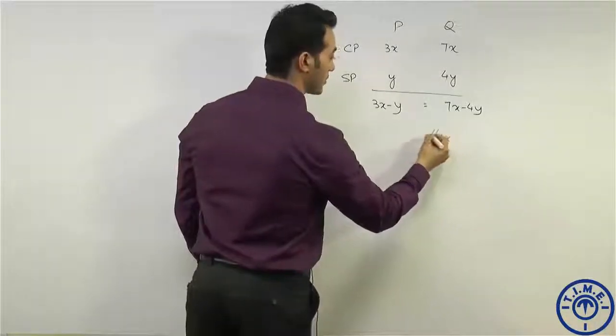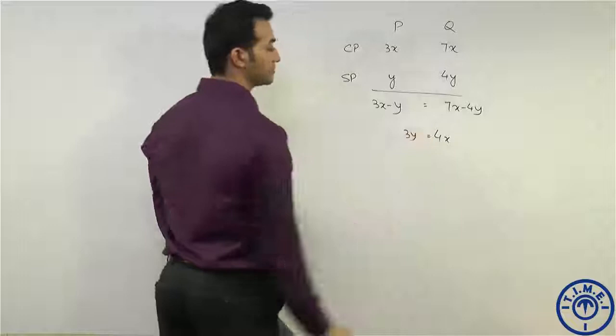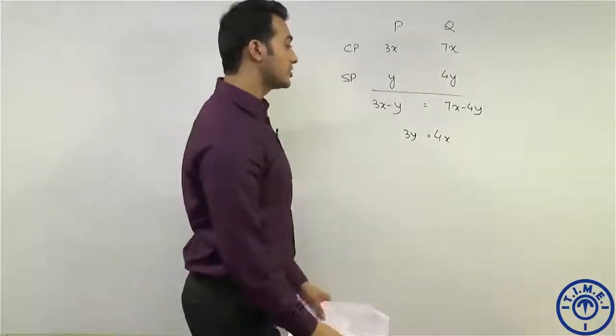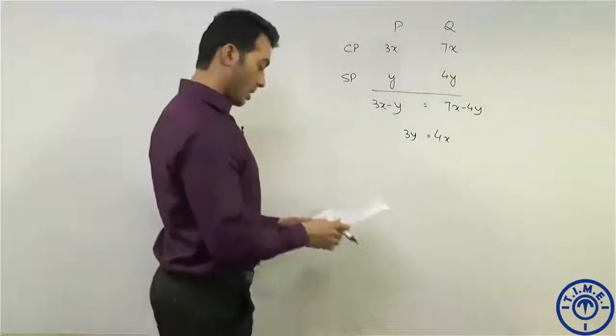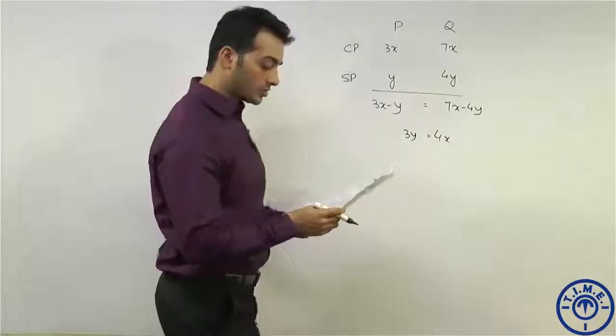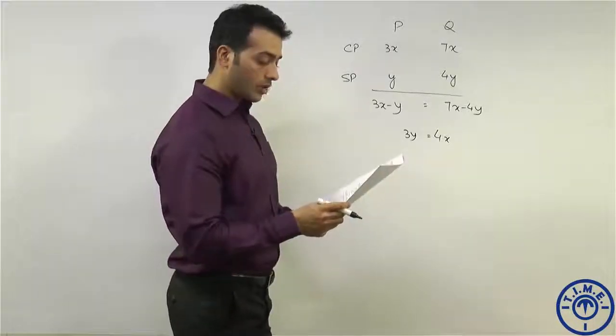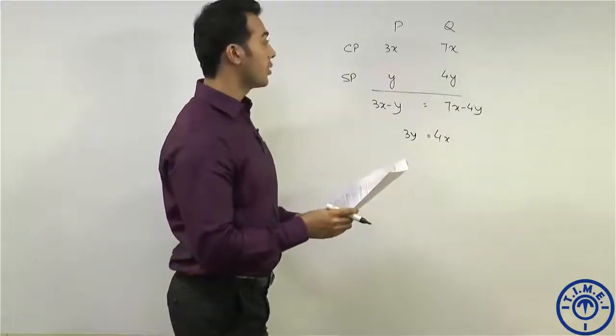Which we get as 4x equals 3y. This is the relation between x and y. Now the final question is: what is the ratio between the cost price and the sale price of Q?